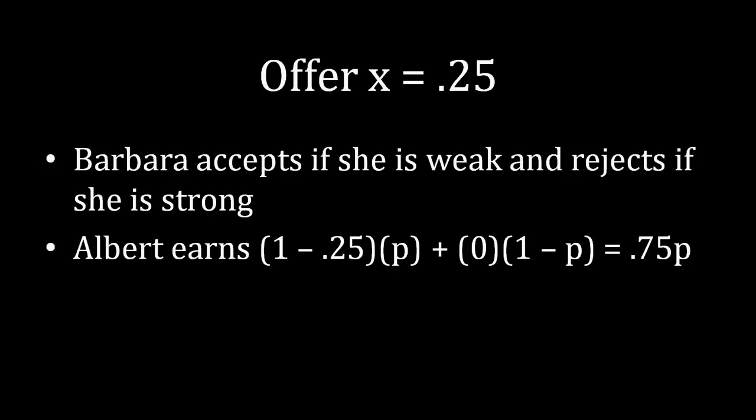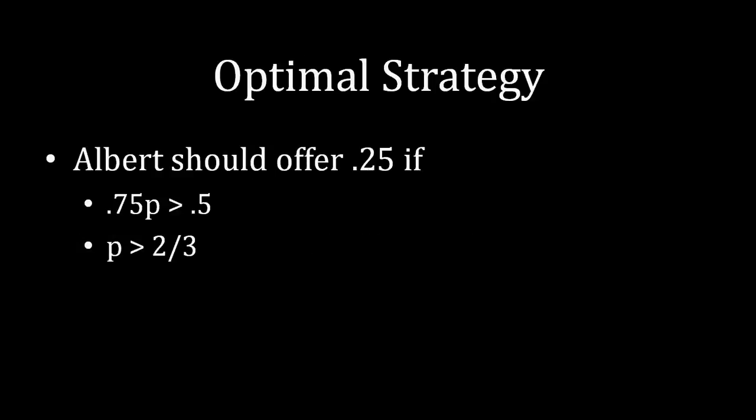To figure out which offer is better, we compare the two payoffs. Albert should offer 0.25 if his payoff from offering 0.25 exceeds his payoff from offering 0.5 — that is, if 0.75P > 0.5. Solving for P, we find that if P > 2/3 — in other words, if the probability that Barbara is weak exceeds two-thirds — Albert should make the aggressive offer that leaves less for Barbara. By the analogous argument, if P < 2/3, Albert should make the safe offer of 0.5, which guarantees acceptance.